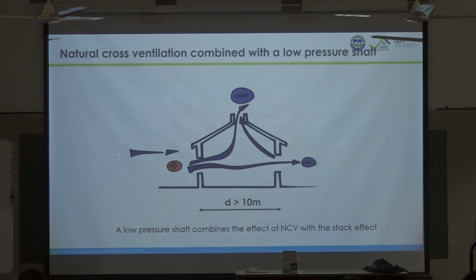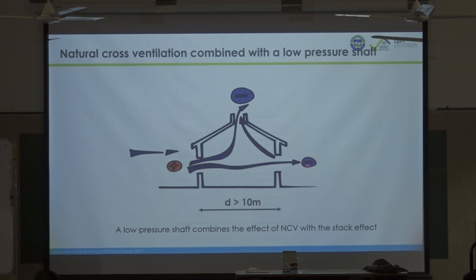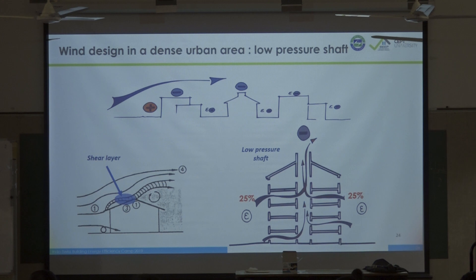With a low pressure shaft, if the wind comes from the left you have high pressure windward and low pressure leeward, but this shaft low pressure is even higher, multiplying the possibilities of air movement inside — from the windward facade and also from the leeward facade up to the top of the roof. This applies when the building length exceeds 10 meters, and can be used in dense urban areas where the building height must be above the surrounding buildings for the shaft to work.